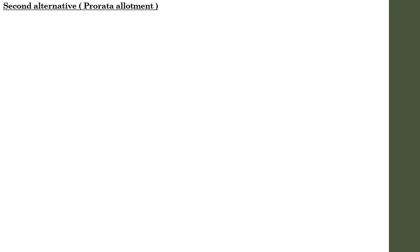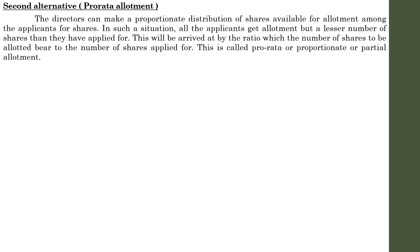The directors can make a proportionate distribution of shares available for allotment among the applicants. In such a situation all the applicants get the allotment but a lesser number of shares than they have applied for. This will be arrived at by the ratio: number of shares to be allotted divided by number of shares applied. This is called pro-rata, proportionate, or partial allotment.